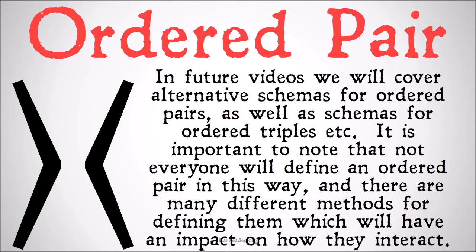In future videos we will cover alternative schema for ordered pairs, as well as schema for ordered triples, etc. It is important to note that not everyone will define an ordered pair in this way, and there are many different methods for defining them, which will have an impact on how they interact with other theorems and other parts of set theory. However, the inherently important part of an ordered pair definition is that it makes the elements of that ordered pair no longer interchangeable in order. As we saw with our example of AB, you couldn't switch those, because suddenly you would have a different set representing that ordered pair.